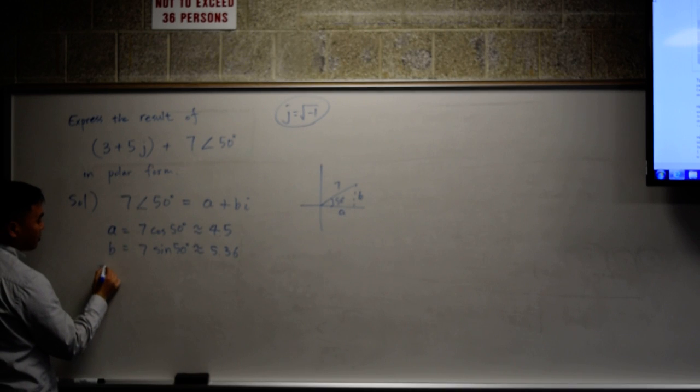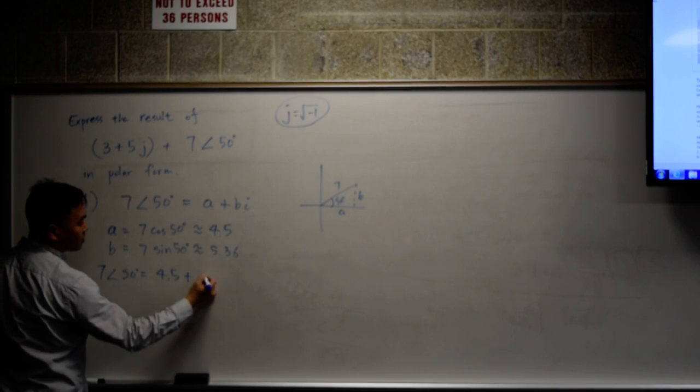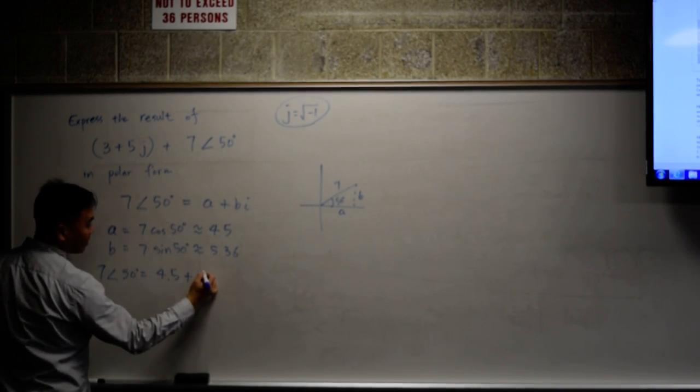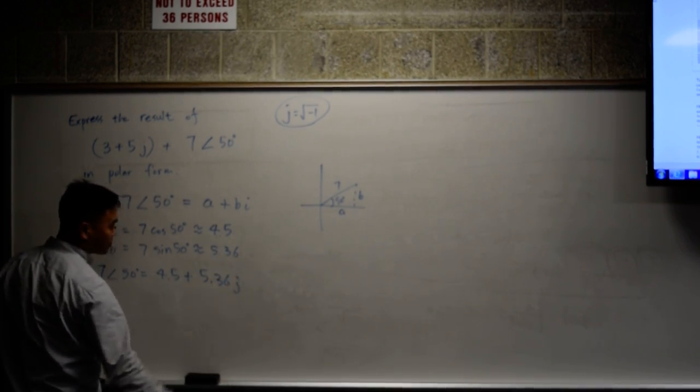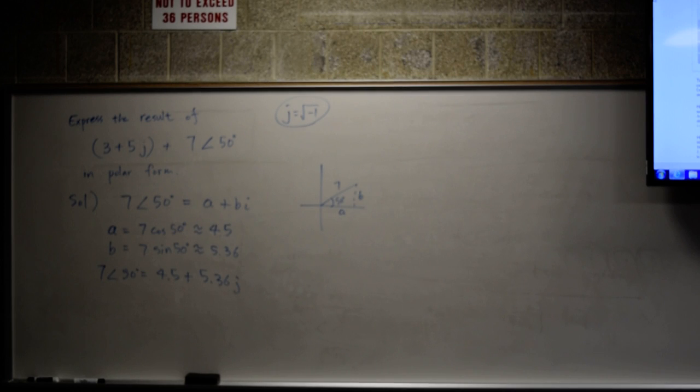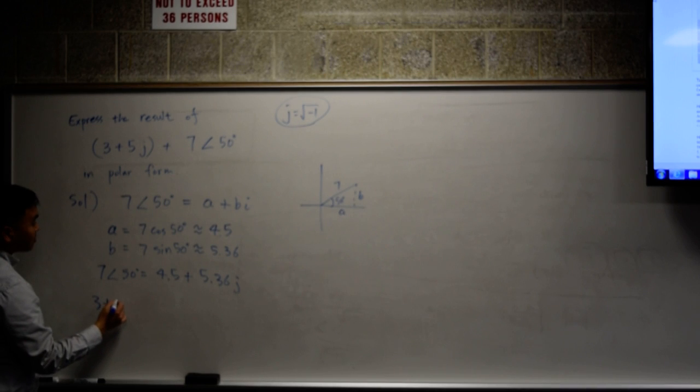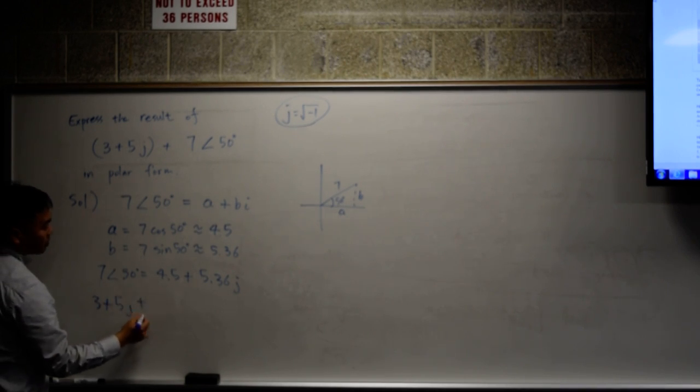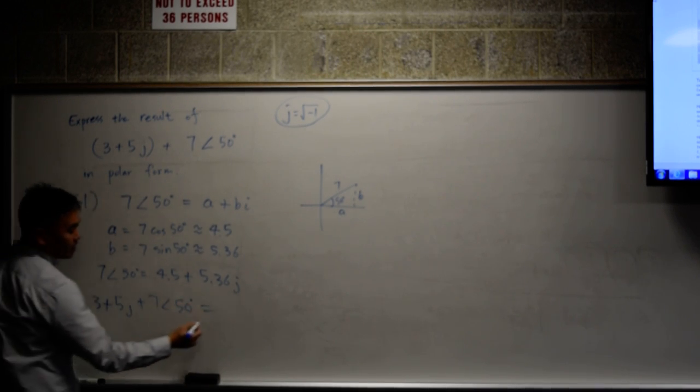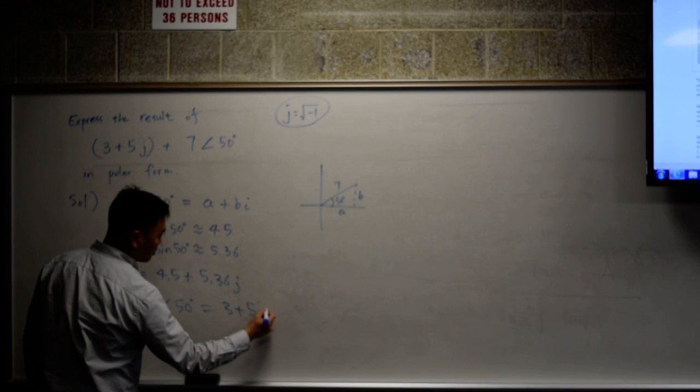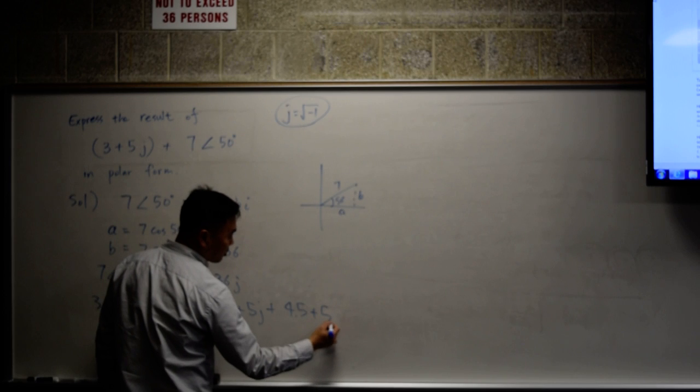Therefore, we can rewrite 7 angle 50 degrees as 4.5 plus 5.36j. Now we can add these two without any problem. So now we can say 3 plus 5j plus 7 angle 50 degrees is same as adding 3 plus 5j plus 4.5 plus 5.36j.